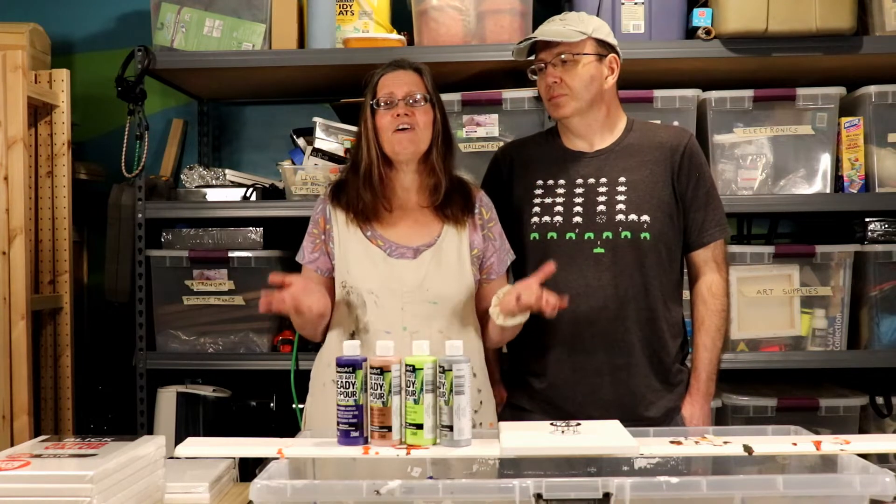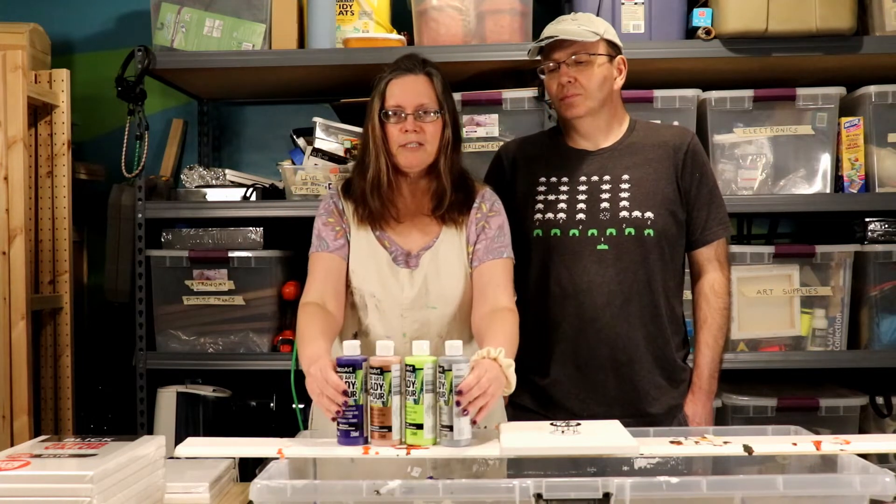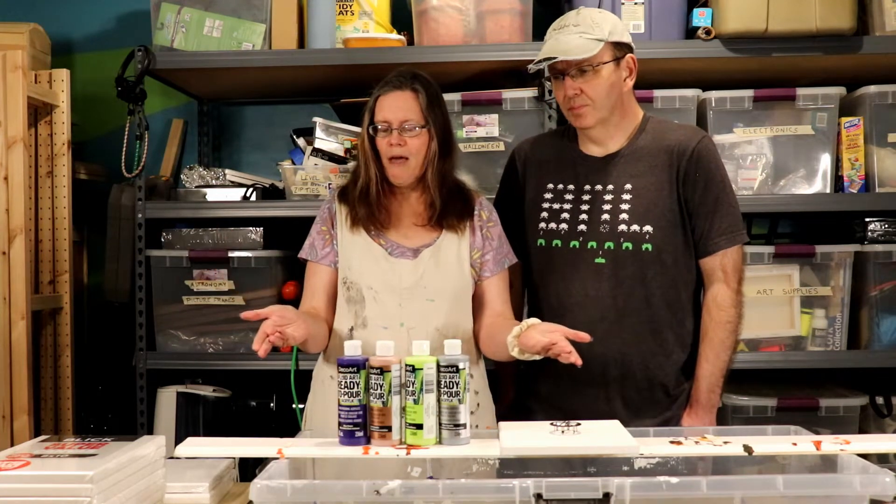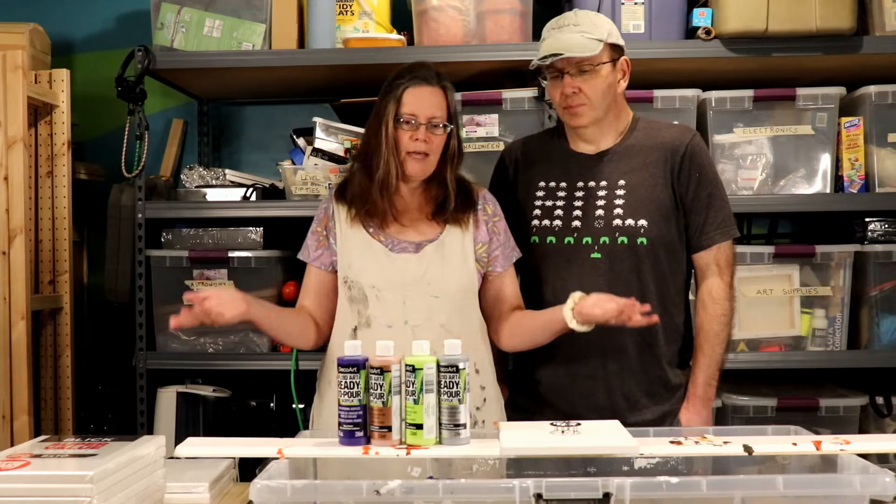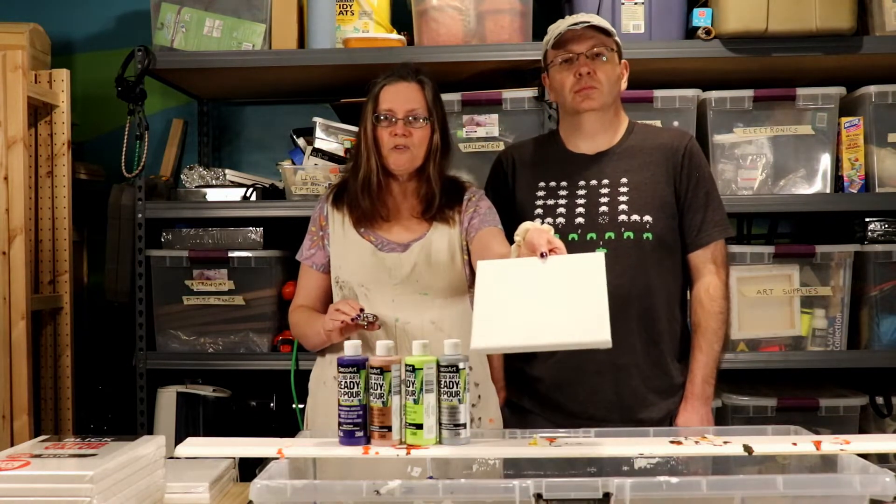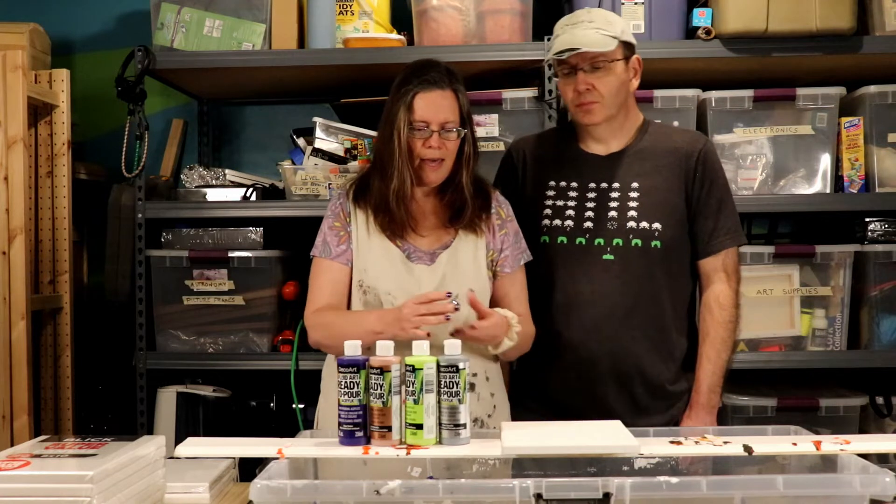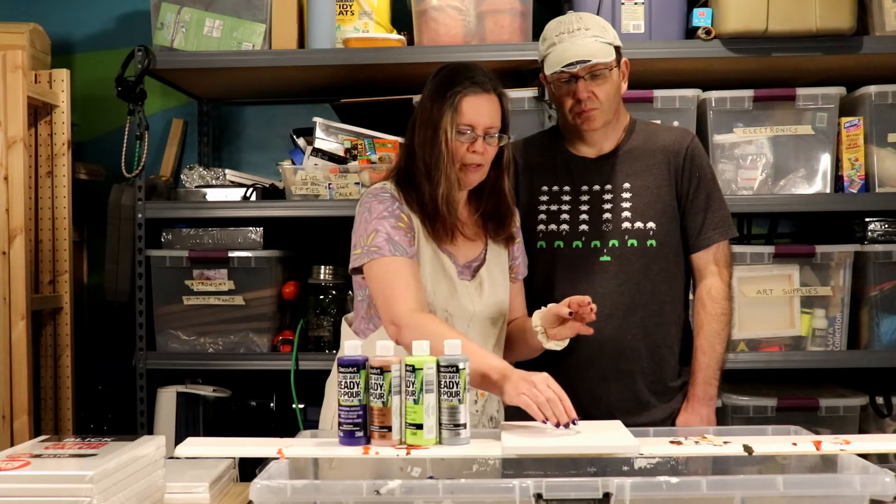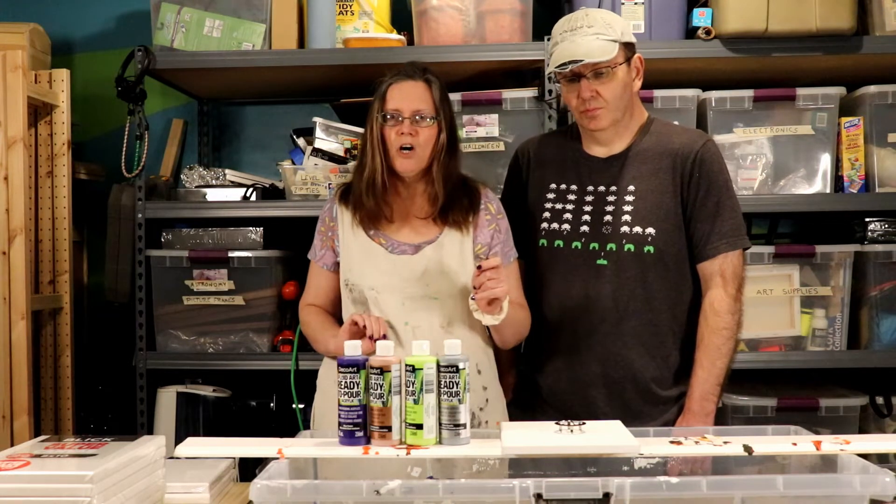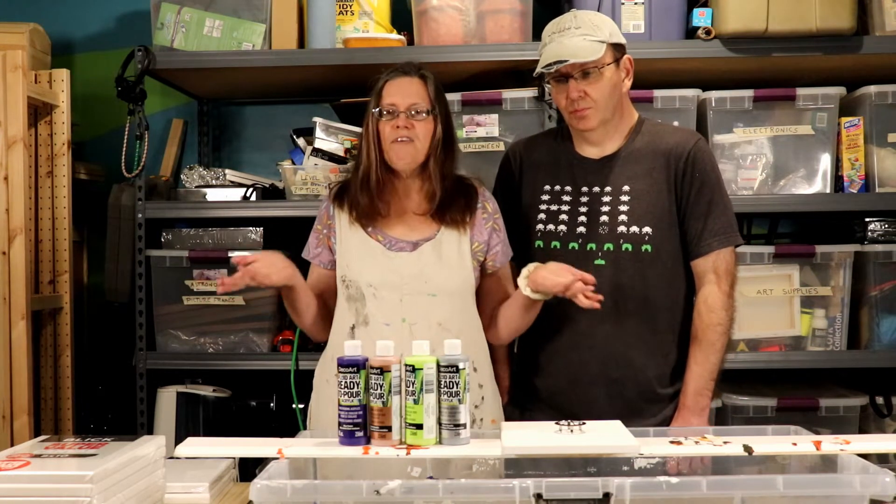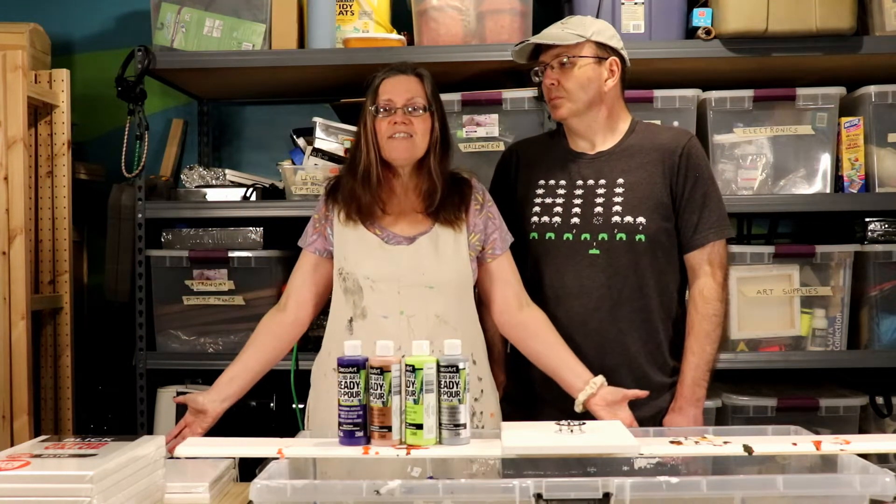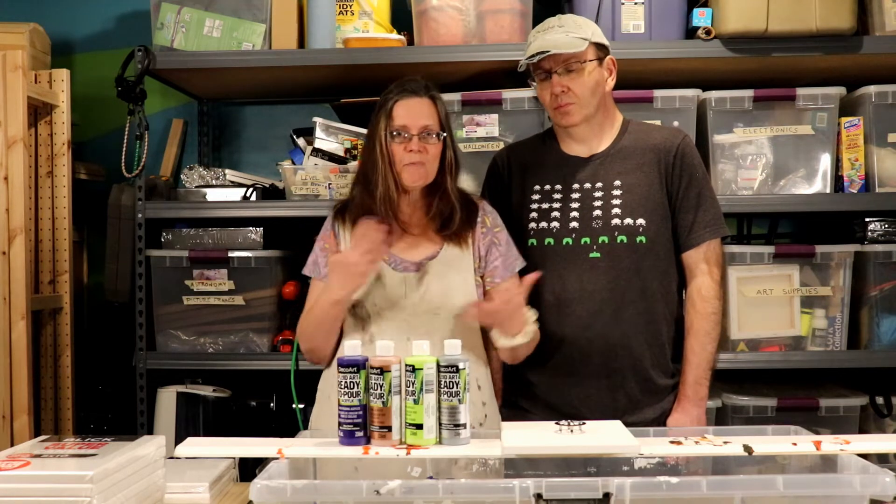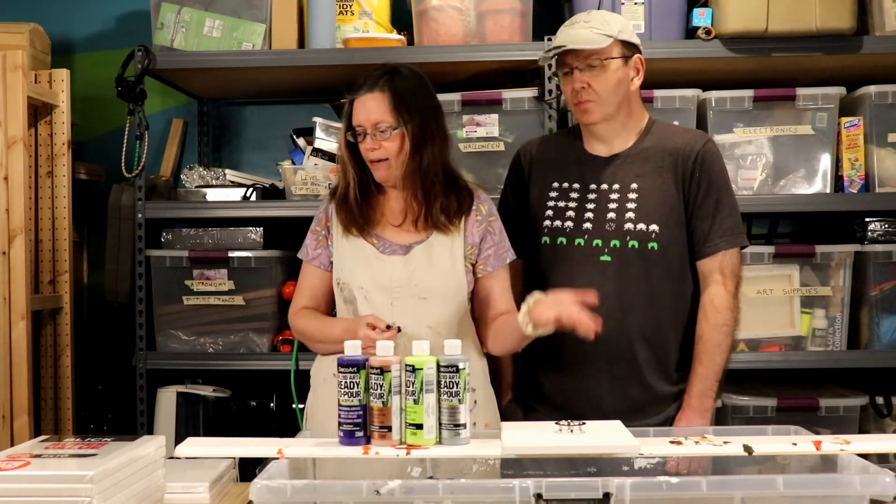To get a better feel for what consistency the paint should be, we picked up these pre-made ready-to-use paint pour paints. We're going to start with one small square-sized canvas and I've got a bathtub sink strainer, and we're going to pour the paints over that and just get a feel for the consistency, how it pours when it's pre-mixed, supposed to be like it's supposed to be, and just try a new paint technique.